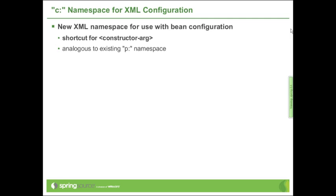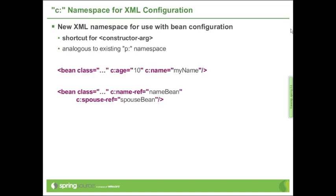Moving on to another minor feature in the configuration space: the C-namespace for XML configuration is basically just a variant of the P-namespace that we've had since Spring 2.0. It allows for concise, inline specification of constructor arguments and constructor argument values — it would also work with constructor argument references. The idea is the same as with the P-namespace: instead of having nested constructor argument elements, you would have an inline definition within the main bean element, which is much more concise, particularly when applied to a larger group of beans.